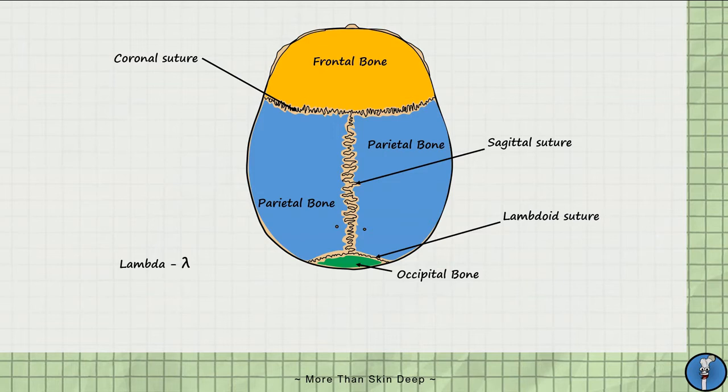The points where the sutures meet are also named. Anteriorly, we have the bregma, which is Greek for top of the head. It is located at the junction between the coronal and sagittal suture. Posteriorly, we have the lambda, which is the junction of the lambdoid and sagittal sutures.